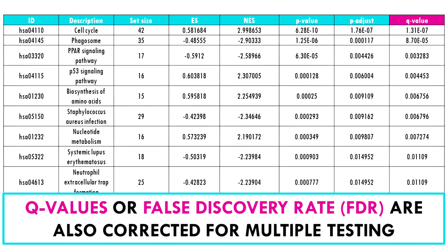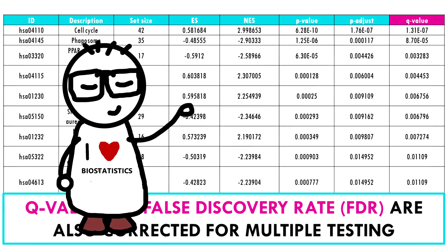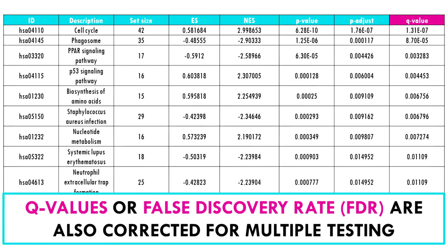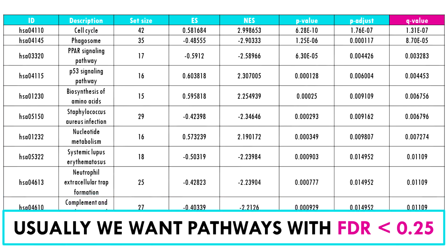The q-value might be a better option — it's also a way to correct the p-value but it is less stringent. You might know the q-value by the name false discovery rate or FDR. It's the probability that a gene set with a certain enrichment score is a false positive. For example, an FDR of 25% indicates that the result is likely to be valid three out of four times. You basically want an FDR lower than 25%, but you might want to be more stringent if you have fewer samples or want more robust results. When comparing multiple gene sets, use the FDR.